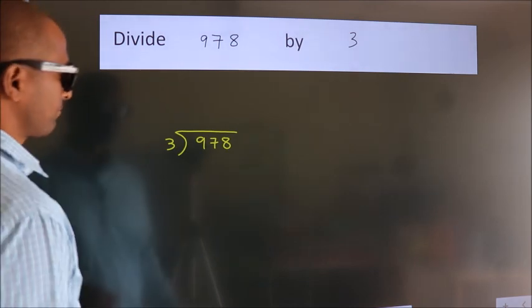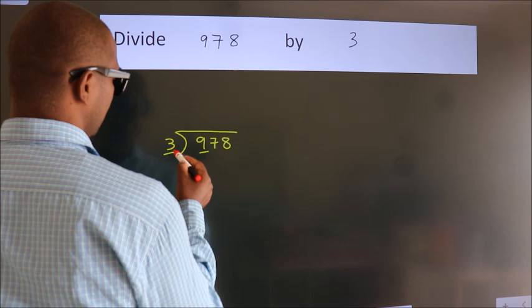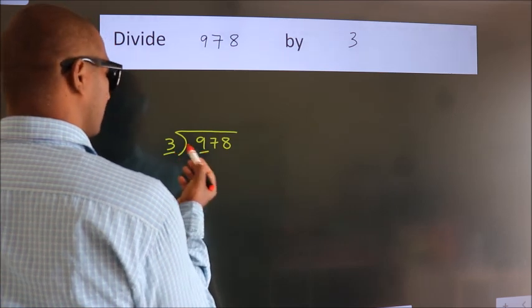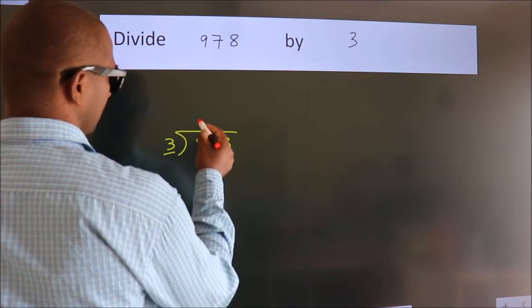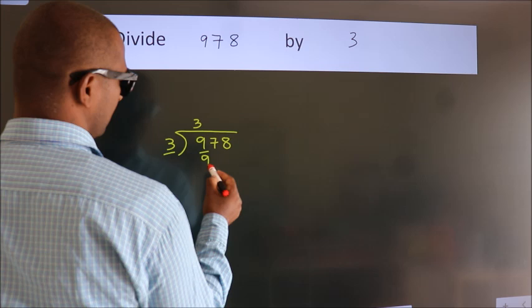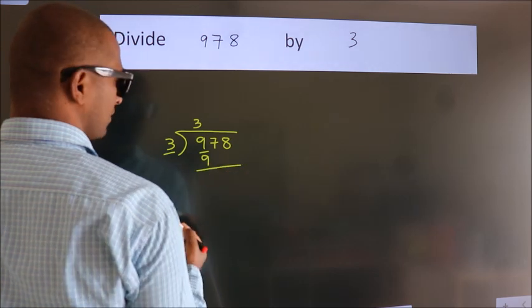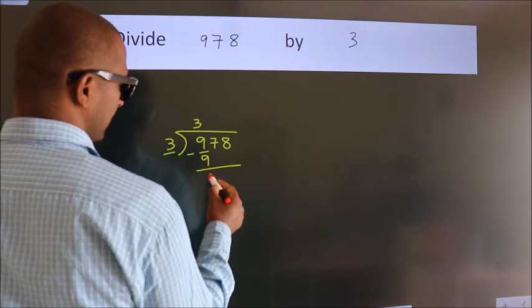Next, here we have 9, here 3. When do we get 9 in the 3 table? 3 × 3 = 9. Now we should subtract. We get 0.